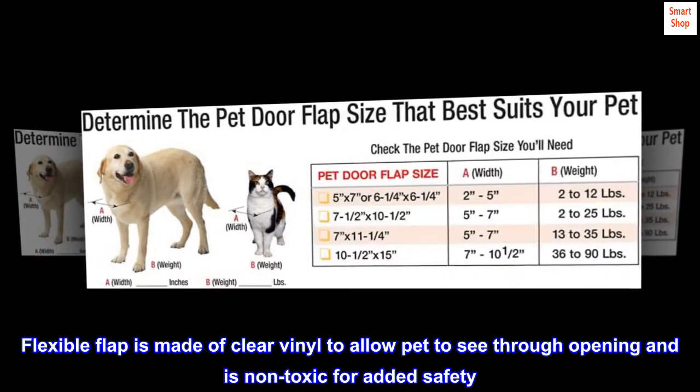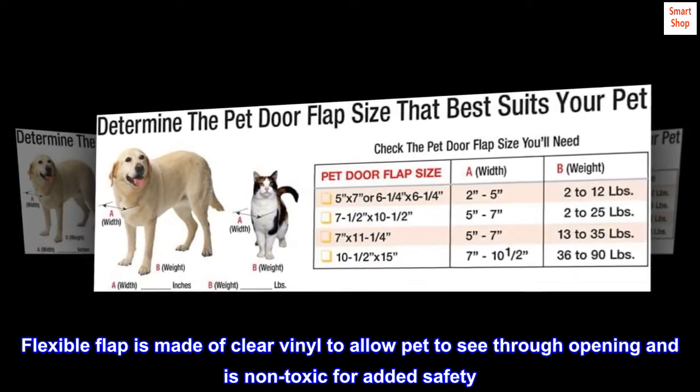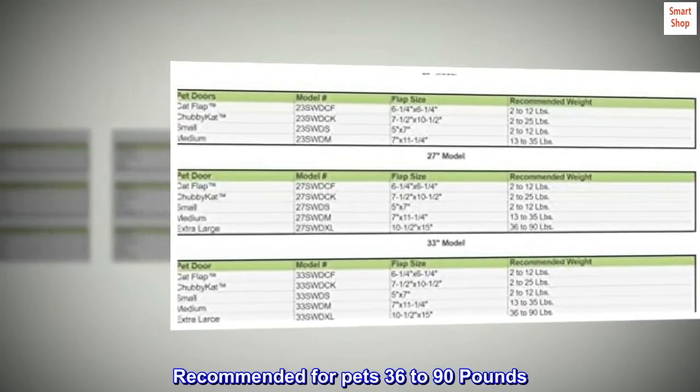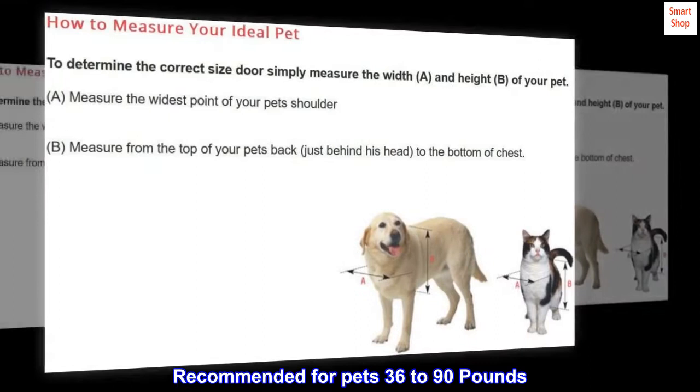Flexible flap is made of clear vinyl to allow pet to see through opening and is non-toxic for added safety. Recommended for pets 36 to 90 pounds. Animal lockout slide included.